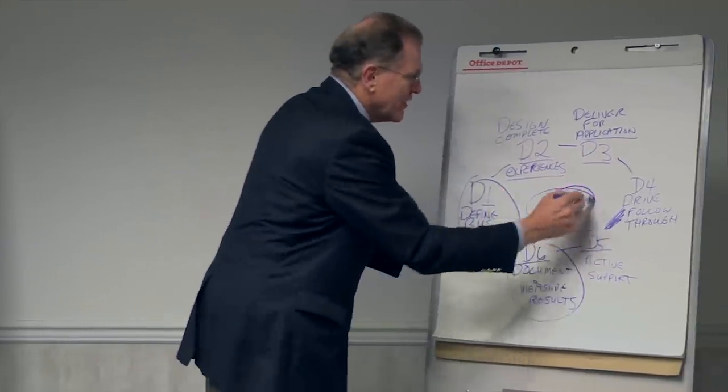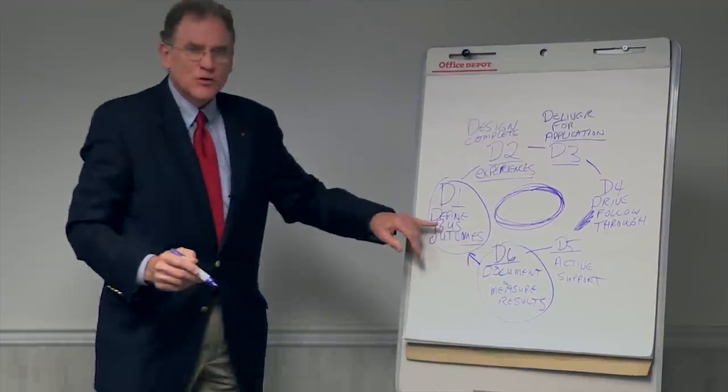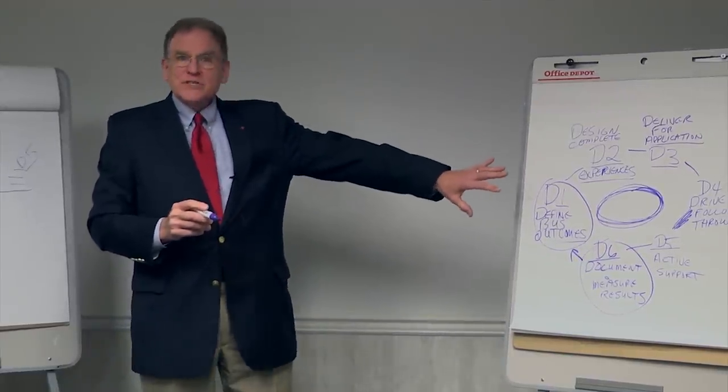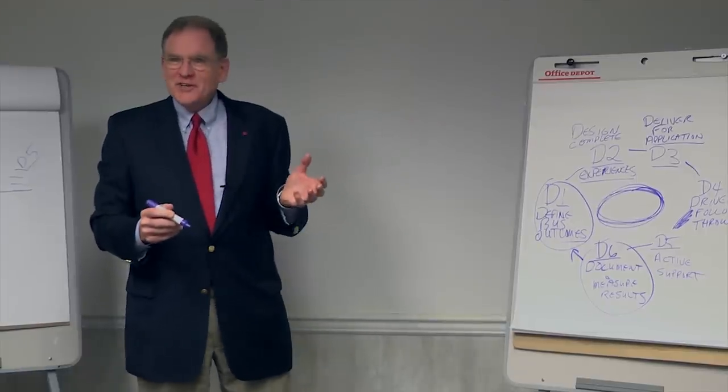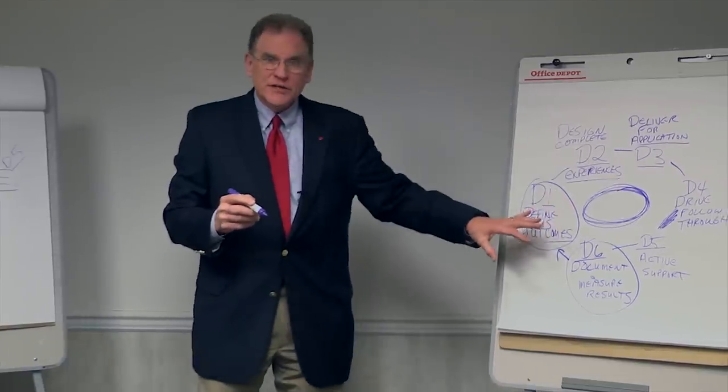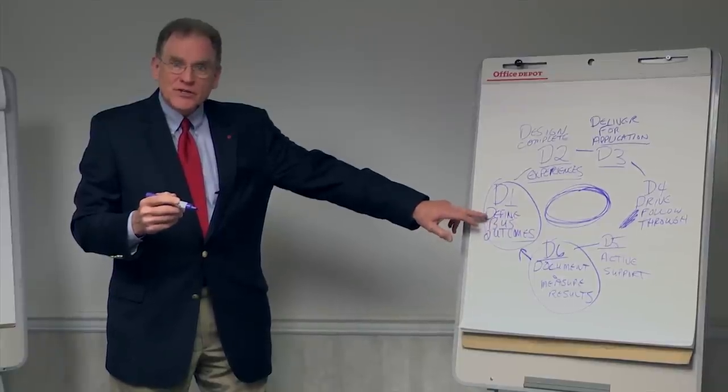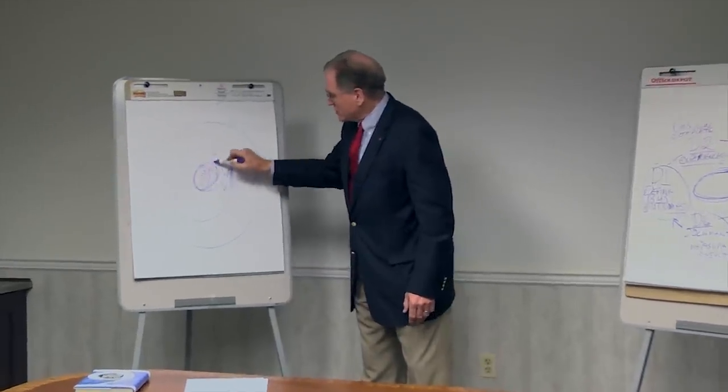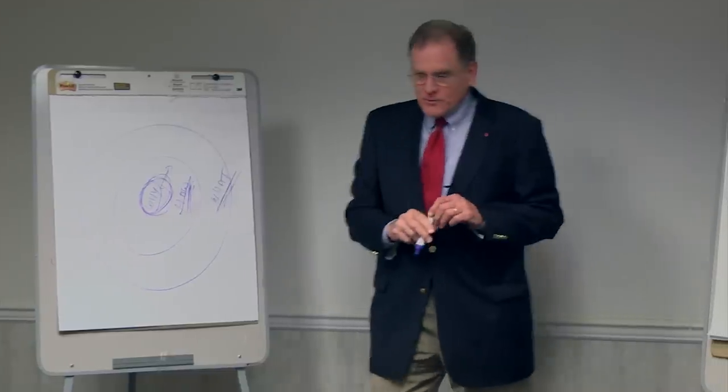So D6 is documenting results. When you put all this together, you've got a big continuous improvement process. Because once you get those results, you go right back to D1 and start thinking about how to make it better. I've used this in lots and lots of programs. People are always asking me, what's the most important D? They always ask me that. And I say, the key is optimizing all the Ds. But if I had to answer that question, I'd start right here. Because if you don't get this right in the beginning, the why you're doing the program, and what are the results you're seeking, you're probably not going to get where you want to go. So that's an overview of the six disciplines.